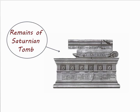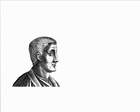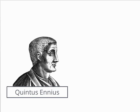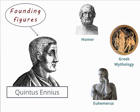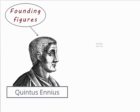Very early on, however, Greek meters entered Latin poetry. The poet Quintus Ennius, who lived in the 3rd and 2nd centuries BC and was considered one of the founding figures of Latin poetry, looked to Greek sources for influence. One of those influences was Greek meter.